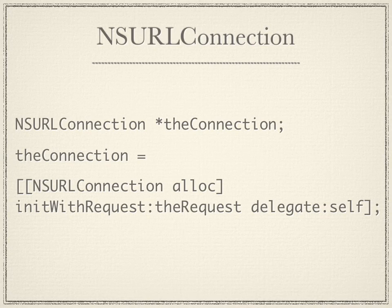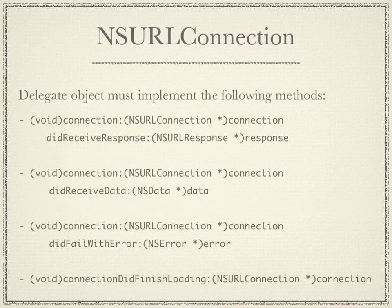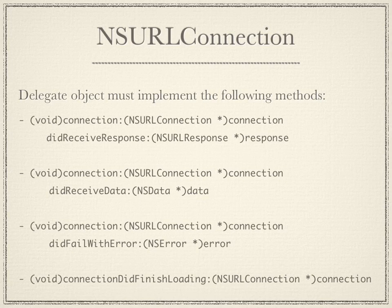NSURLConnection automatically goes out to the internet with the specified HTTP method. The delegate has to implement four methods. Connection did receive response is when the server says hello, it's thinking and will send data shortly — it's also the HTTP response you normally get. Connection did receive data is when the server starts sending data in small packets. Connection did finish loading is when all data has been sent. Did fail with error is called when something goes wrong.